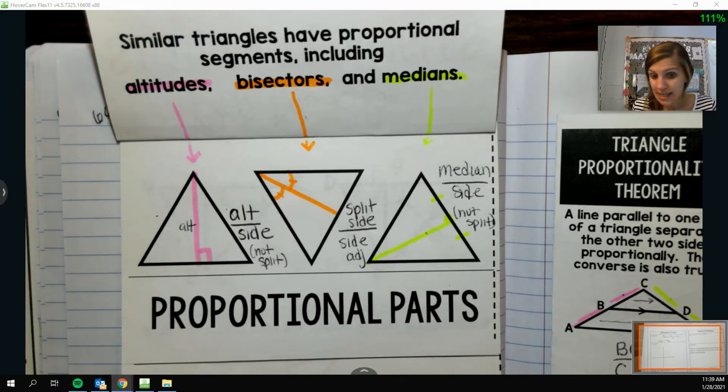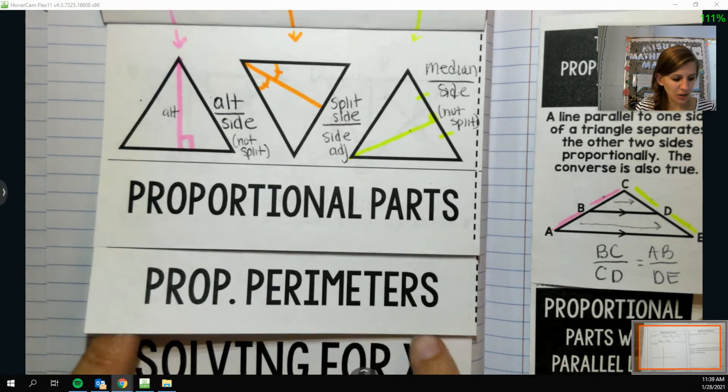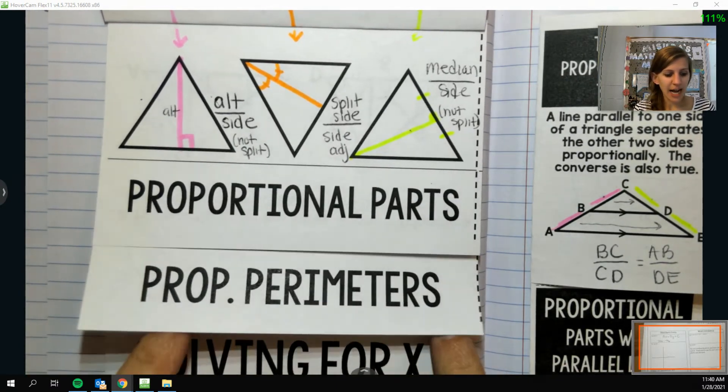So I want to practice some of these crazy ratios, but it's not the next one down. So the next one has to do with perimeters, which we'll come back to, but let's jump down to solve for x.